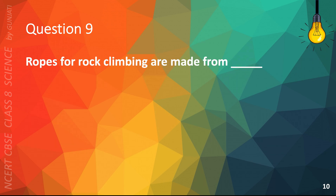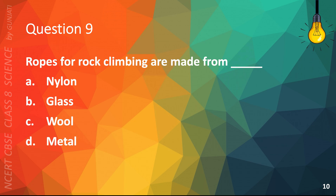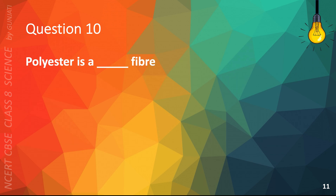Question 9. Ropes for rock climbing are made from: A. Nylon, B. Glass, C. Wool, or D. Metal. The correct answer is A. Nylon.